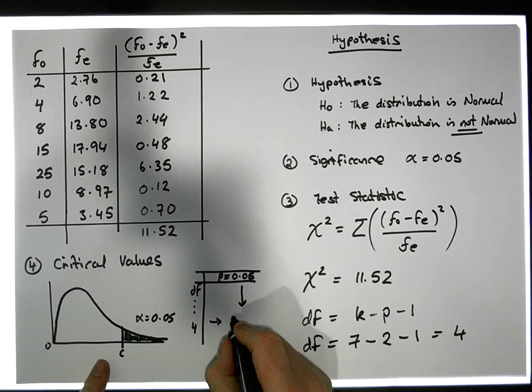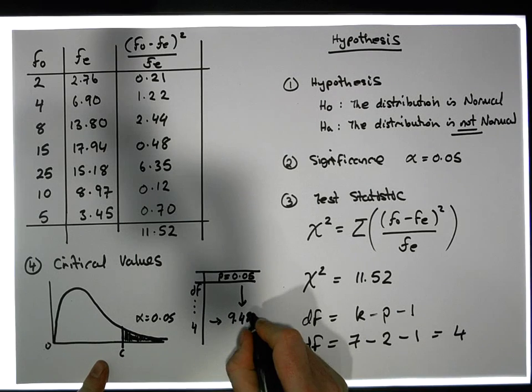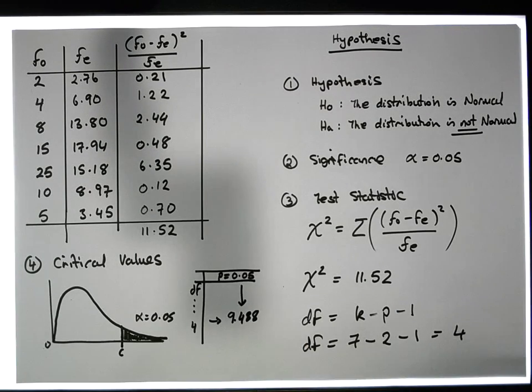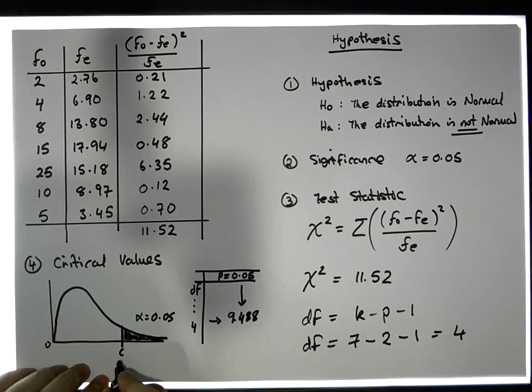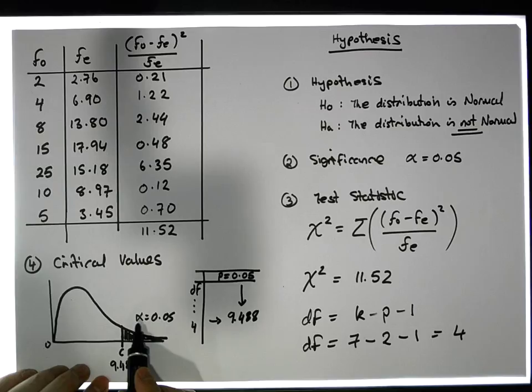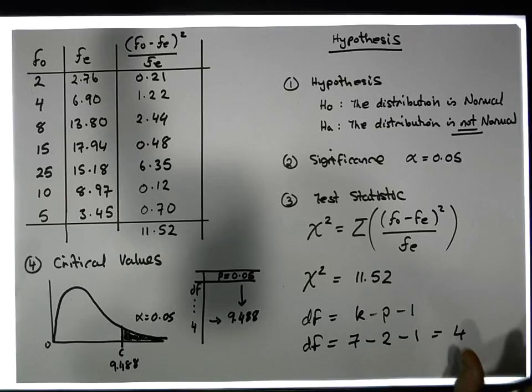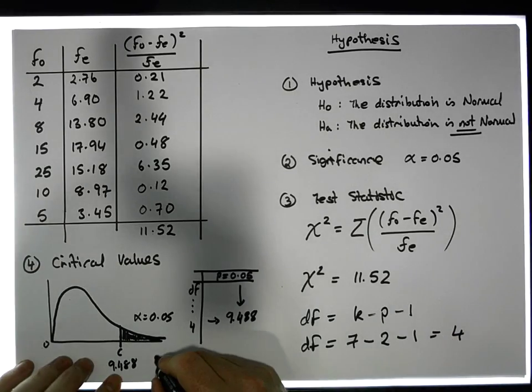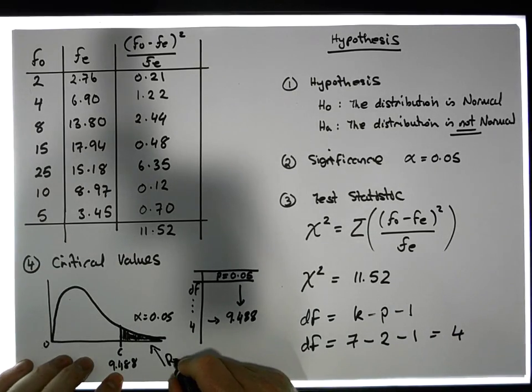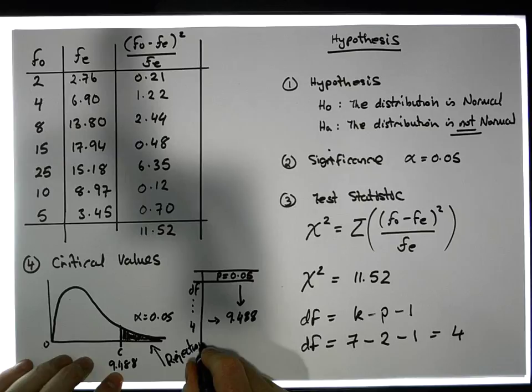In other words, any test statistic bigger than 9.488 has a probability of at most 0.05 of occurring. Now we're ready to make our decision. This is our rejection region in this part of the tail—we only reject if our test statistic is in that area.